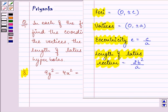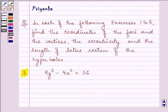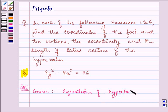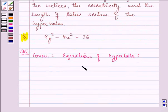Now, let us proceed on with our solution. We have given the equation of hyperbola as 9y² - 4x² = 36.